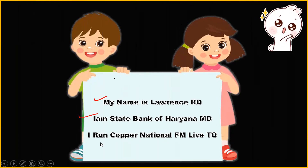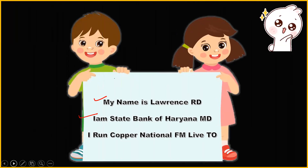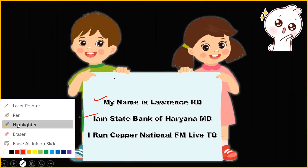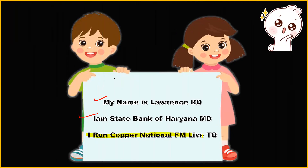And the third line: 'I run Copper National FM Live 2.' I run Copper National FM Live 2. Actually, I thought to put 'Chemistry' but since the element Copernicium starts with 'Copper,' I kept 'Copper' instead of 'Chemistry.' Now repeat all three lines: My name is Lawrence R.D. / I am State Bank of Haryana MD. / I run Copper National FM Live 2.